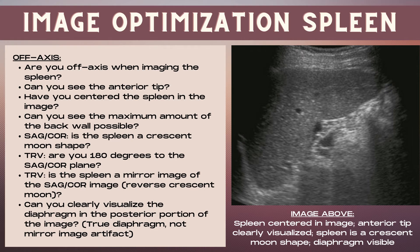Ensure you can clearly visualize the diaphragm in the posterior portion of the image and that you're visualizing the true diaphragm, not mirror image artifact. In the ultrasound image to the right, the spleen is centered within the image, the anterior tip is clearly visualized, you can see the maximum amount of the back border, the spleen is a crescent moon shape in the sagittal or coronal plane, and the diaphragm is clearly visible. This is a properly optimized image of the spleen.